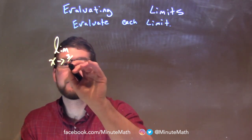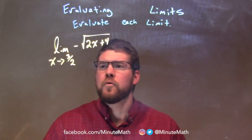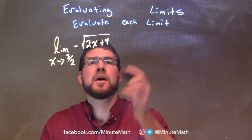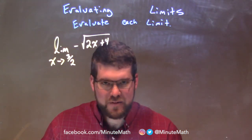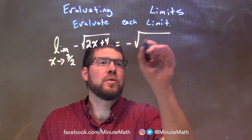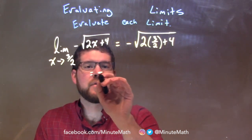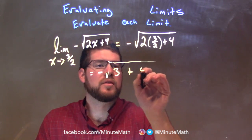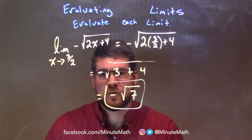The limit as x approaches 3 halves of negative square root of 2x plus 4. We have a root function, and we can take the limit wherever it exists. Since 3 halves is positive and plus 4 stays positive, we're not taking the square root of a negative. Plugging 3 halves in for x: negative square root of 2 times 3 halves plus 4. The 2s cancel, leaving 3 plus 4 equals 7. So our answer is negative square root of 7.